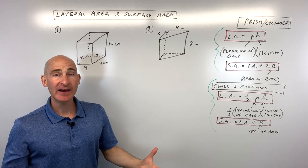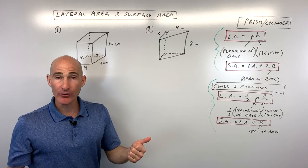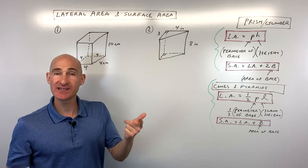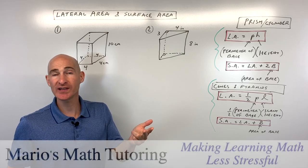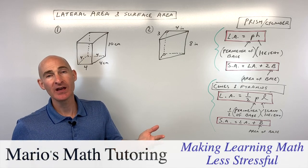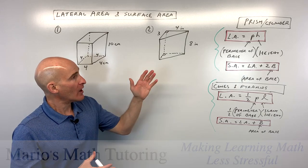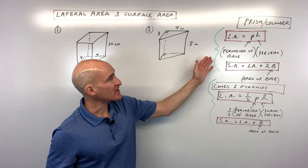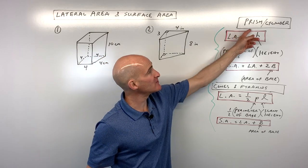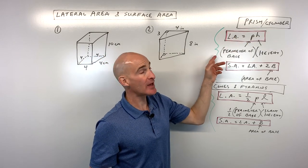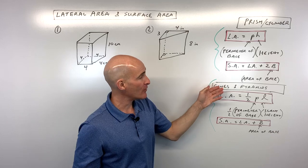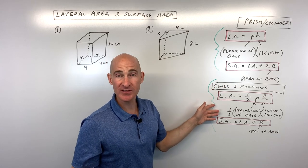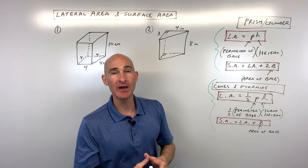In this video, you're going to learn how to find the lateral area as well as the surface area of prisms, cylinders, cones, and pyramids. It's helpful to group prisms and cylinders together because the formulas are the same, and to group cones and pyramids together because those formulas are the same.